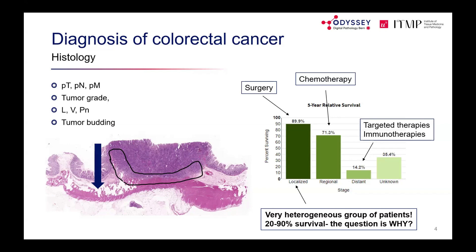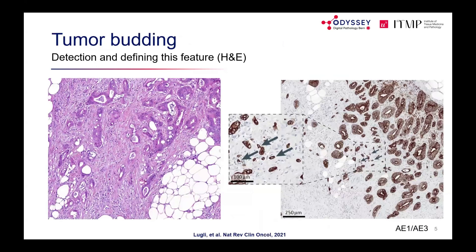A key reason for seeking additional prognostic factors is the heterogeneity of stage 2 patients — those without lymph node metastases but with deep tumour penetration. Five-year survival in this group varies wildly across cohorts, from 20% to 90%, making budding a tool to stratify high-risk patients for additional therapy.